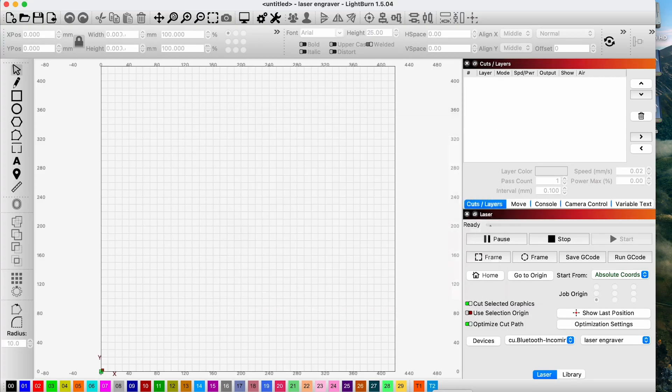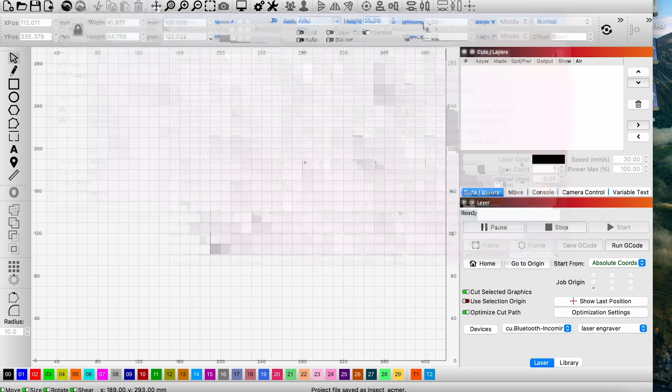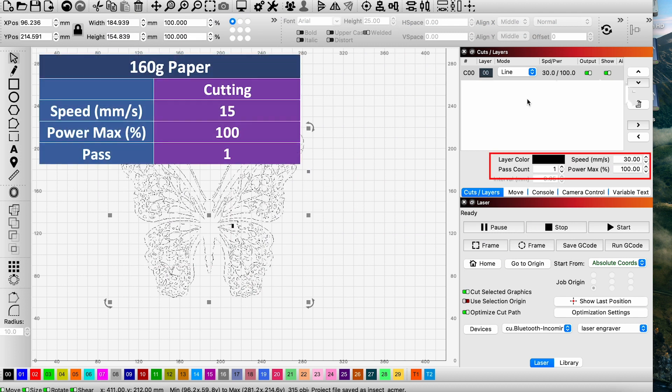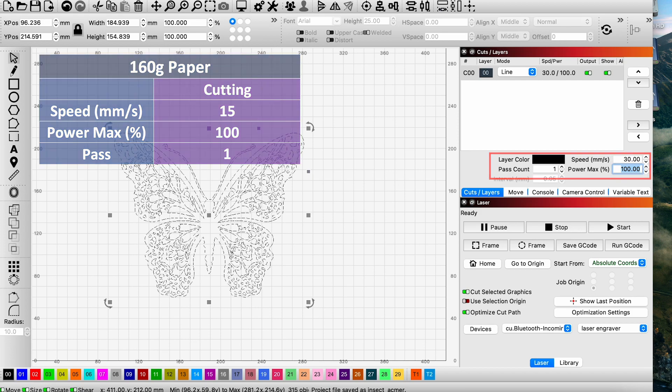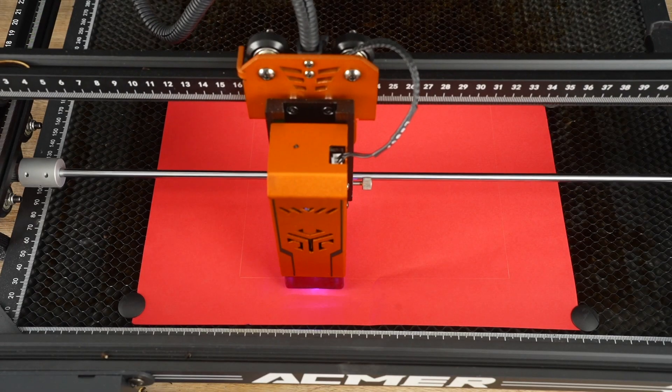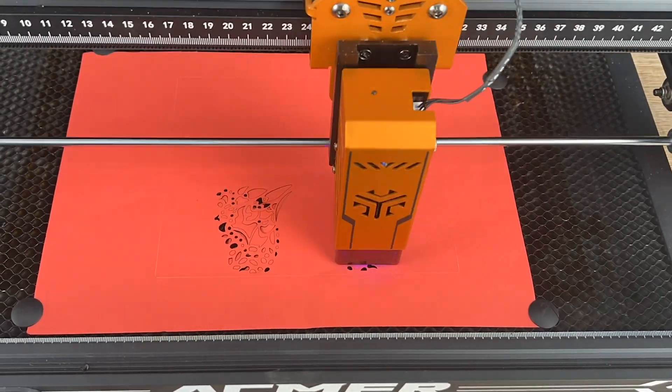Next, open Lightburn and import the desired file. Select the object and adjust the speed to 15 millimeters per second at 100% power. This process typically requires approximately 4 minutes to reach completion.